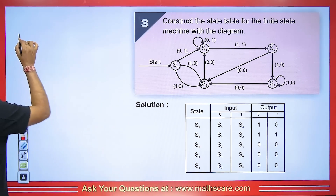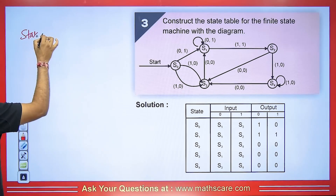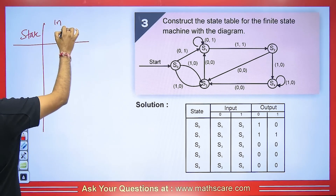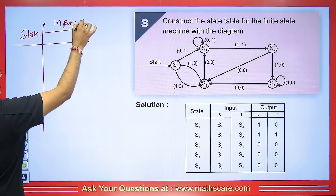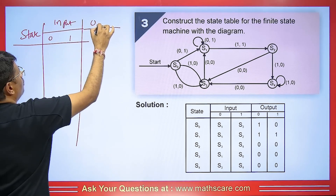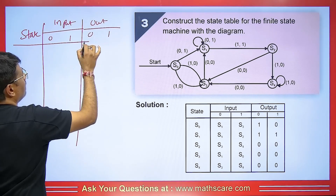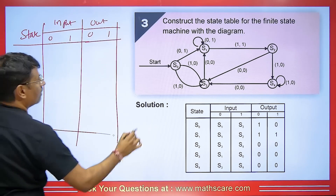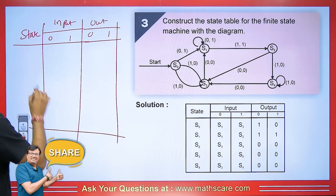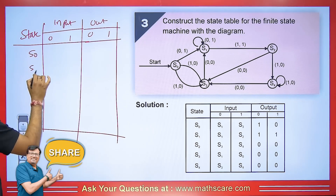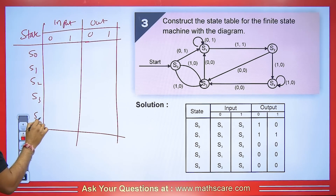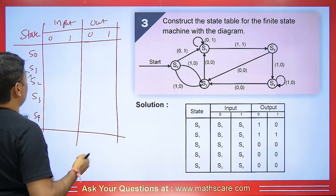We will write the state, then after writing the state, we will write input and output. The input we are getting is 0 and 1, so write 0 and 1. The output is also showing 0 and 1 in the diagram. We have states S0, S1, S2, S3, and S4.